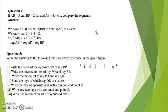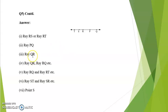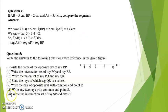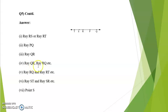Next question: write the union set of ray PQ and ray QR. The union set of ray PQ and ray QR is ray QR. State the rays of which segment QR is a subset. Segment QR is a subset of ray QR itself and ray RQ, and there are many others — for example, ray QR and ray RQ.